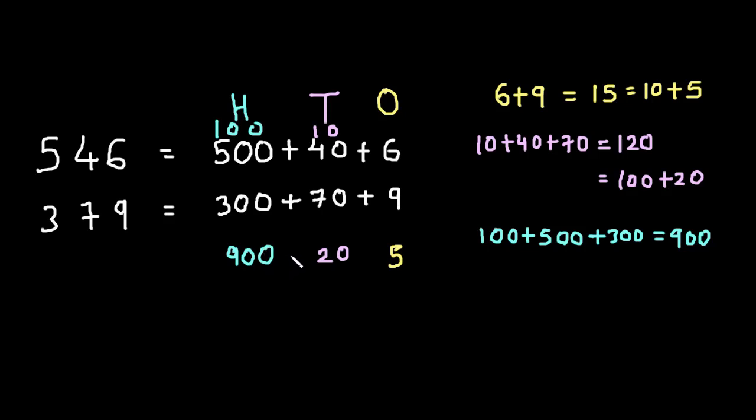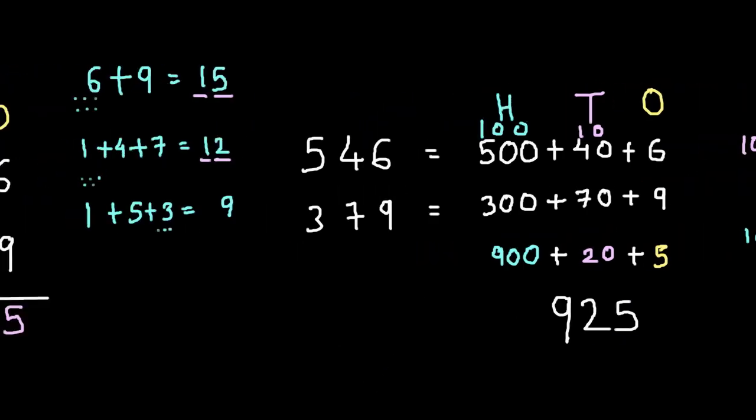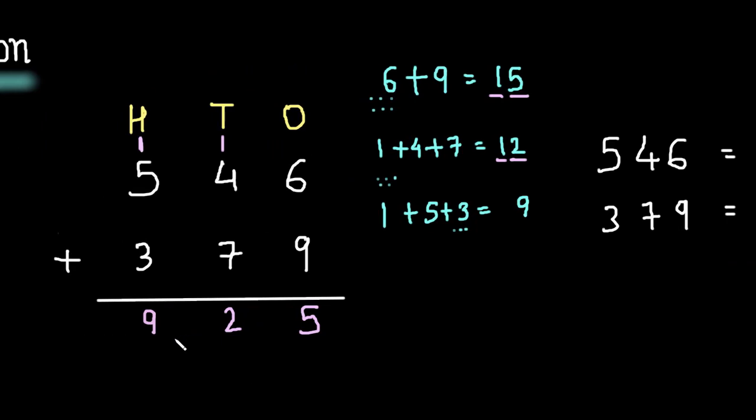Now, let us add them together. 900 plus 20 plus 5. So, the answer will be 925. And here you can see the answer 925. So, this way the addition sums with carryover are done here.